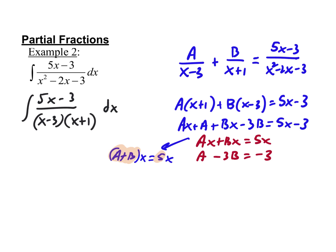Solve that system. See what you get for A and B. Then we'll talk about how to integrate it after that. The system I'm solving is A plus B equals 5, and that just comes from there.